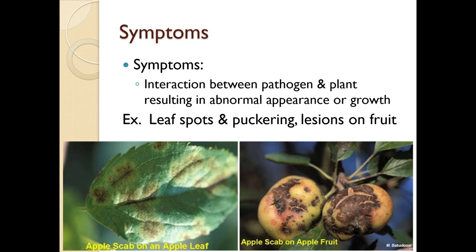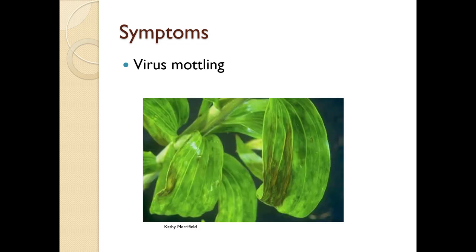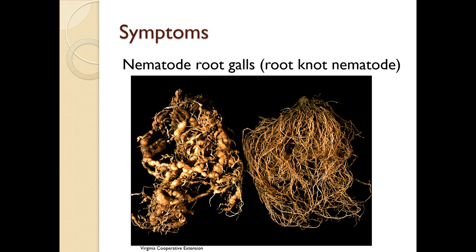This is apple scab - on the left you've got it on the leaf and on the right you've got it on the fruit. Bacterial infection will appear as a water-soaked appearance. Viruses have any number of symptoms; in this case we have virus mottling on lily. This is a symptom of root knot nematode on corn - healthy roots on the right, root knot nematodes on the left.